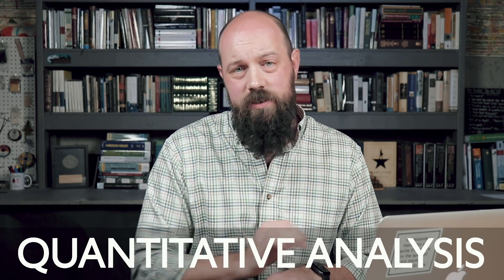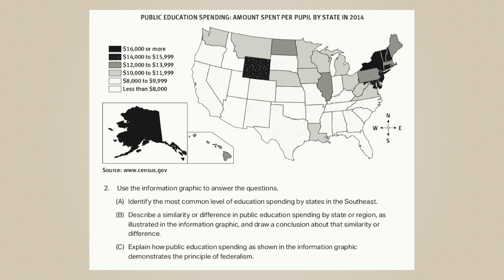Now let's move on to the second kind of question: the quantitative analysis question. In this kind of question, you're going to have to analyze a quantitative stimulus — look at something, interpret the data, and say what it means. The example map shows how much money each state spends per student enrolled in a public school. Even before the questions, you can see patterns: there's a lot more spending in the northeast than in the southeast, and more spending on the east than in the west.